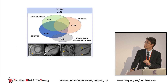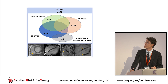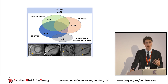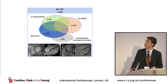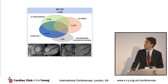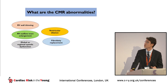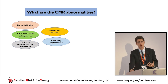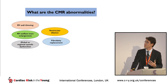Among patients who did not fulfill the cardiac MRI Task Force Criteria, other abnormalities helped in the diagnosis: isolated right ventricular regional wall motion abnormalities, left ventricular involvement, positive genetic tests, or ECG abnormalities were present in these patients. So what are the most common cardiac MRI abnormalities in this disease?